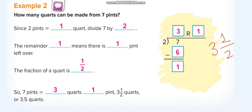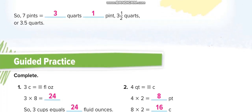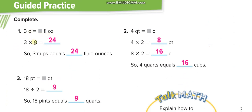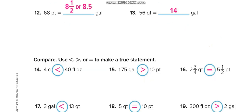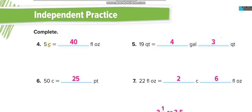Guided practice: 3 cups equals how many fluid ounces? 3 times 8 equals 24. Next: 4 quarts equals how many cups? First convert quarts to pints: 4 times 2 equals 8 pints. Then pints to cups: 8 times 2 equals 16 cups. Next: 18 pints equals how many quarts? Converting from smaller to larger, divide: 18 divided by 2 equals 9 quarts. Five cups equals how many fluid ounces? 5 times 8 equals 40.